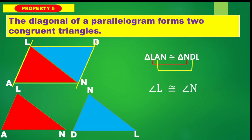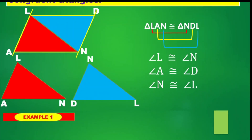As well as angle A and angle D — they are corresponding angles. So angle A is congruent to angle D. And lastly, angle N corresponds to angle L, so angle N is congruent to angle L.